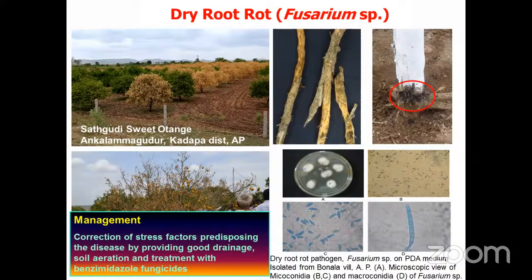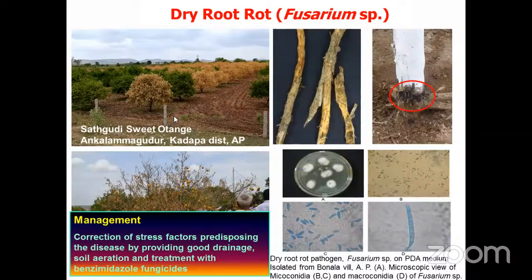For management of dry root rot, correction of predisposing stress factors is important. Providing root drainage, soil aeration, and treatment with benzimidazole fungicides will help to a certain extent. However, if the infection has progressed to the point where 50% of the root system is damaged, rejuvenating the infected tree becomes very difficult.